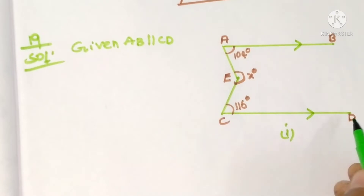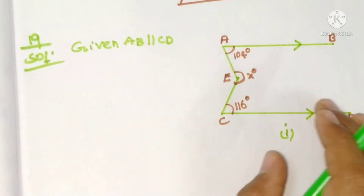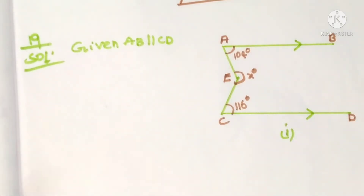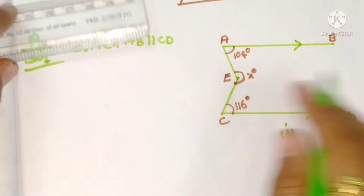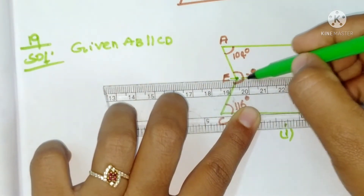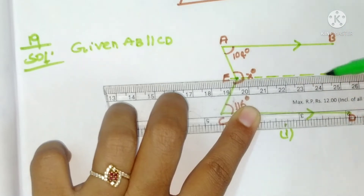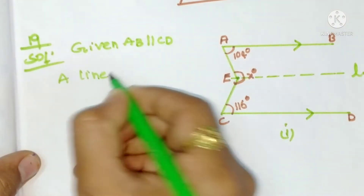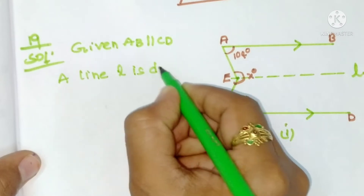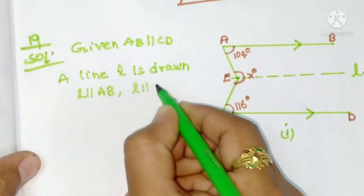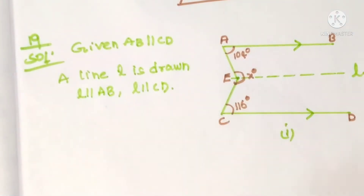In these three figures, AB is parallel to CD and we want to find x. For the first figure, we draw a line L through point E, parallel to AB — so L is parallel to AB, and L is parallel to CD also.